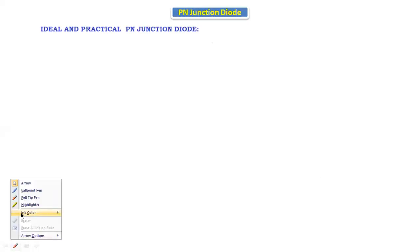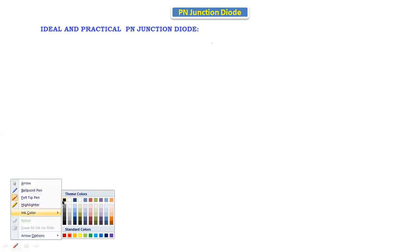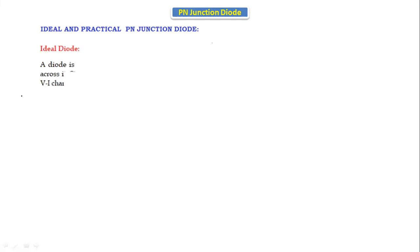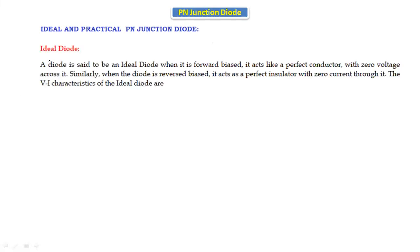Hello everyone, today we are going to discuss the ideal and practical diodes. A diode is said to be an ideal diode when it is in forward bias it acts like a perfect conductor with zero voltage across it, and similarly when the diode is in reverse bias it acts as a perfect insulator with zero current through it.